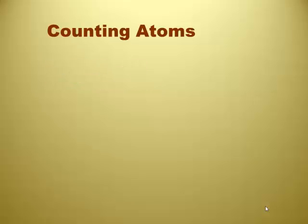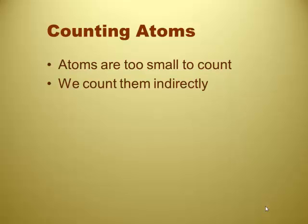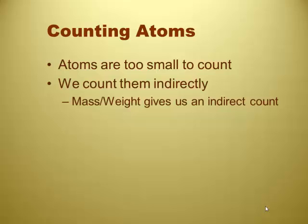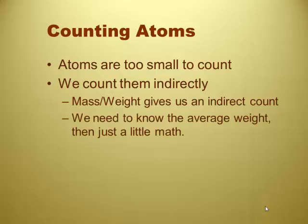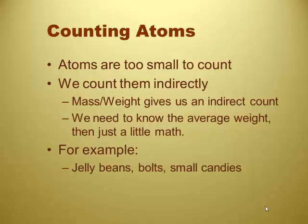All right, so once again, going to the idea of counting atoms. Atoms are way too small to count, so we count them indirectly. The way we do that is we use a mass or weight to indicate the count indirectly. Like in bulk. Yeah, for example when you buy in bulk. You go to the mall and you buy jelly beans in bulk from the candy store. They charge you by weight. They actually know how many you're buying, they can figure it out.